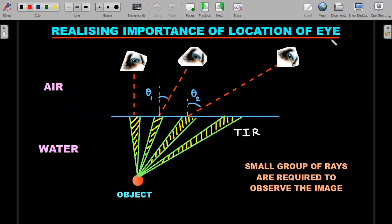Realizing the importance of location of eye in oblique viewing, I tried to depict whatever formula you got in the previous slide in a pictorial manner for easy understanding. Imagine this is air, this is water, and this is the interface. This is the object.